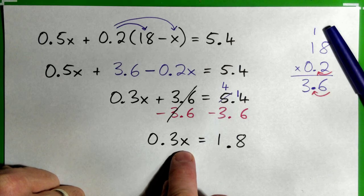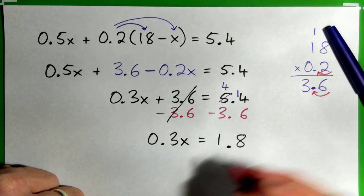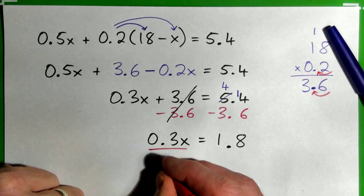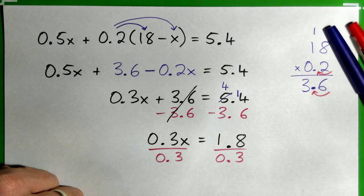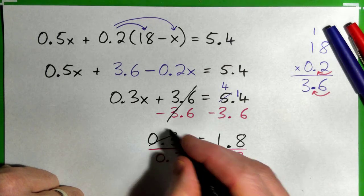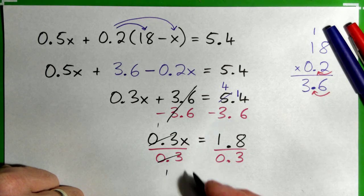So the x is being multiplied by 0.3. So to undo that, you divide by 0.3 on both sides. See that? These 0.3s cross cancel and you're left with x.